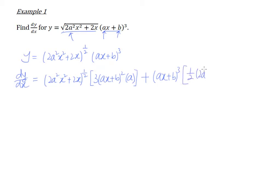I'll bring down a half and copy the same exactly the same thing: 2a² x² + 2x. The entire thing now will be powered to the power of negative half because half minus one gives me a negative half.